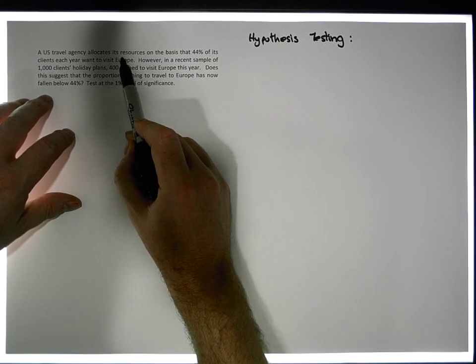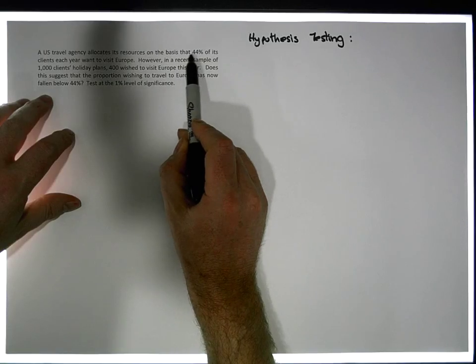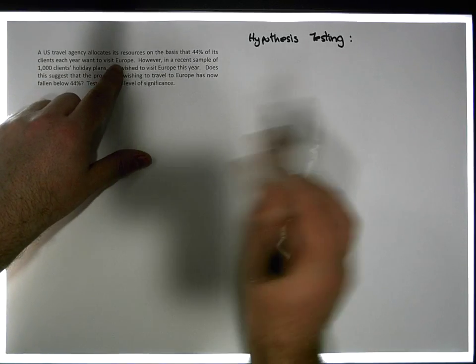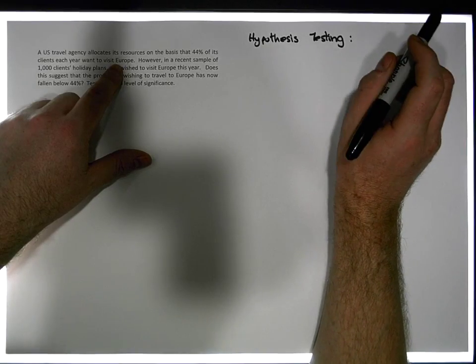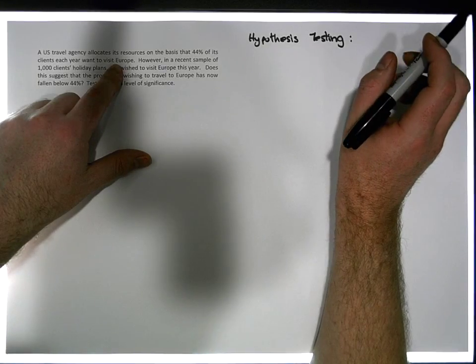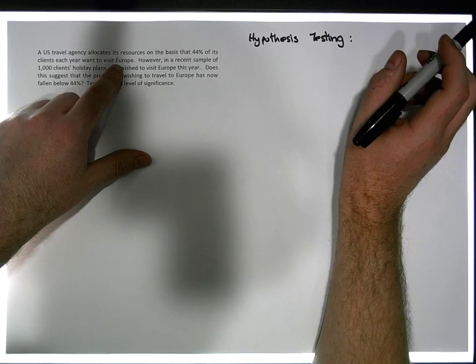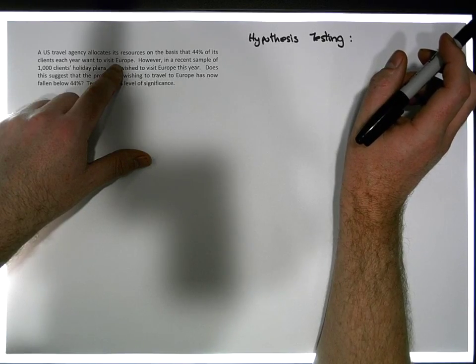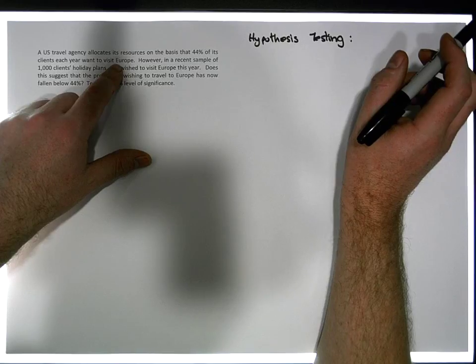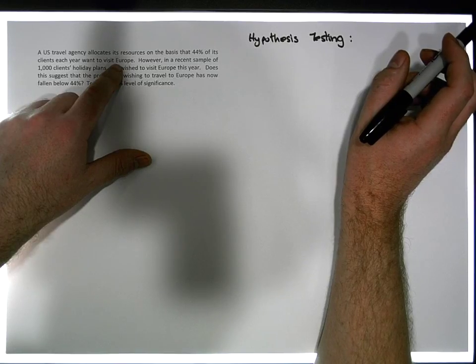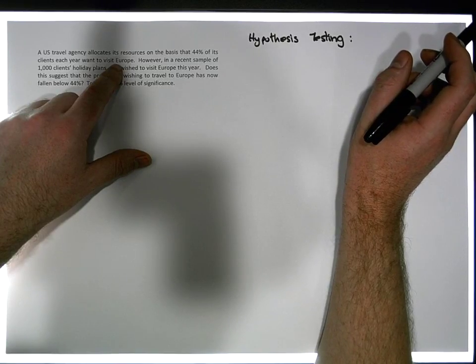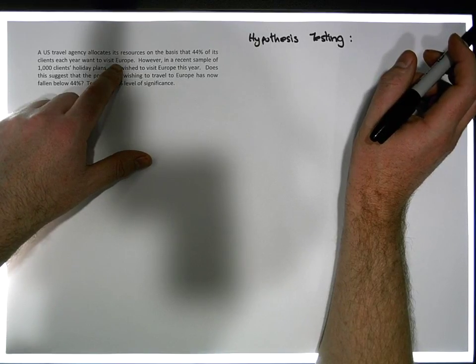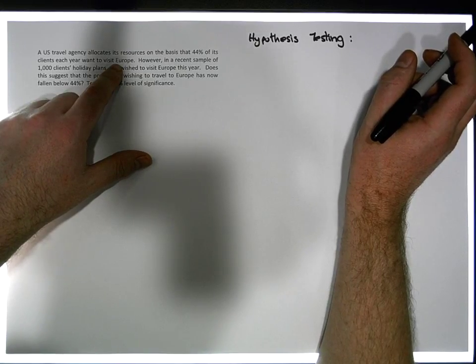A US travel agency allocates its resources on the basis that 44% of its clients each year want to visit Europe. In other words, there's some travel agency in the States, and that travel agency has a number of clients. What it does is it puts 44% of its resources by to cater for those clients that want to travel to Europe.